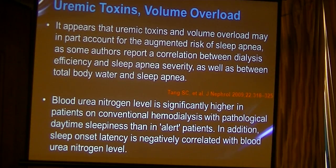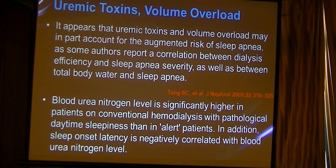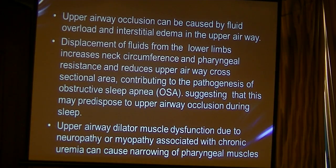Uremic toxins and volume overload may partly account for the increased risk of sleep apnea. Some authors reported a correlation between GFR deficiency and sleep apnea severity, as well as between total body water and sleep apnea. Blood urea nitrogen level is significantly higher in patients on conventional hemodialysis with pathological daytime sleeping than in alert patients. Sleep onset latency is negatively correlated with blood urea nitrogen. Upper airway occlusion can be caused by fluid overload — displacement of fluids from the lower limbs increases neck circumference, pharyngeal resistance, and reduces upper airway cross-sectional area, contributing to obstructive sleep apnea.